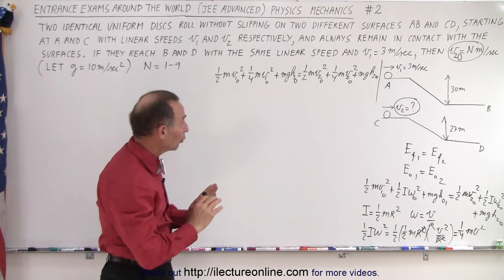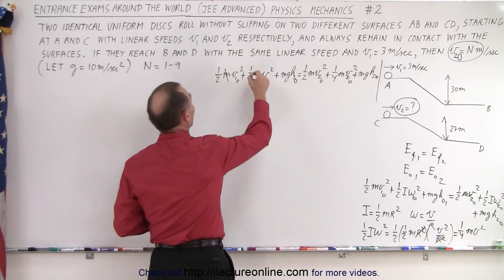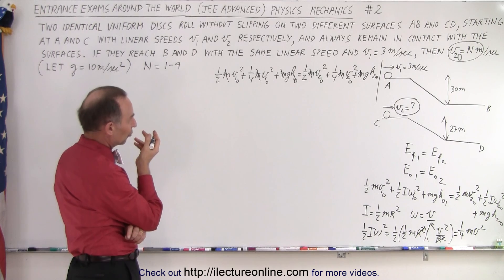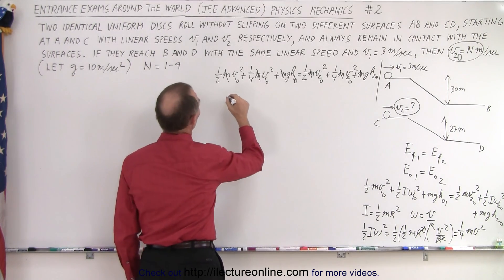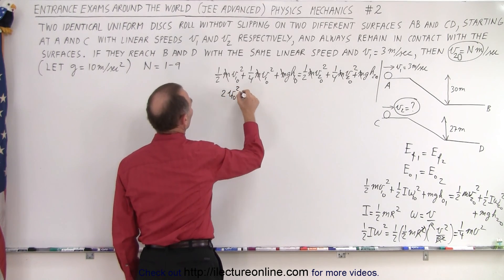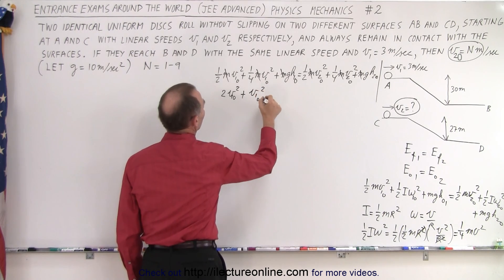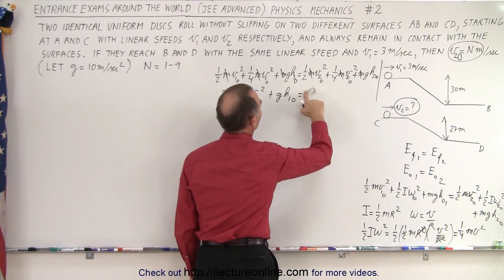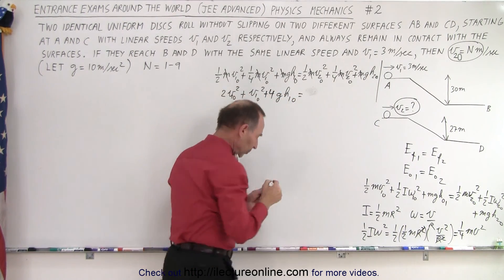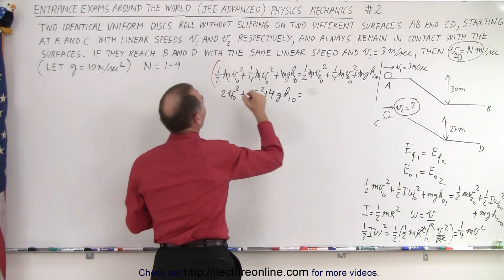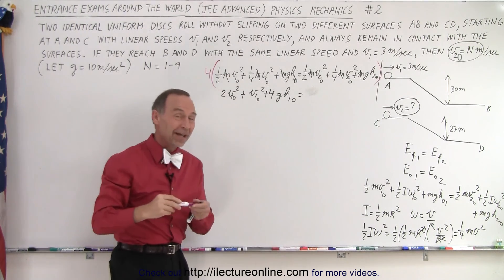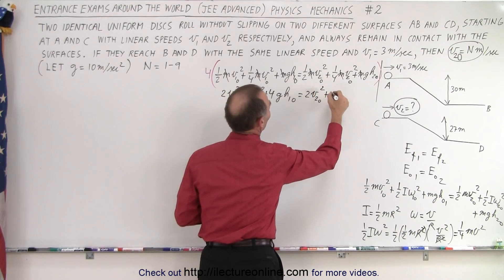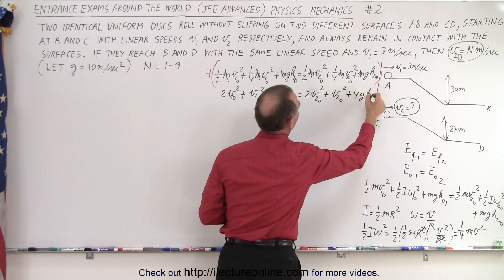Now realizing that all of them include the number m or the constant m, and since they all have the same mass, we can get rid of the m. And then I think I want to get rid of all the fractions. So let's multiply everything by 4 to get rid of fractions. So we get 2 v1 initial squared plus v1 initial squared plus 4 g h1 initial. Let's go ahead and multiply both sides by 4. That way we don't make silly mistakes. And so this is equal to 2 times v2 initial squared plus 1 time v2 initial squared plus 4 times g h2 initial.